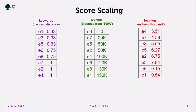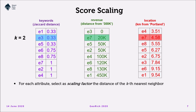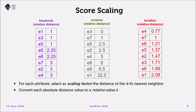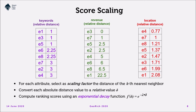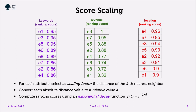Let's take a closer look at how we do the scaling of scores. These are the contents of the ranked lists for our query example regarding companies in Portland. As you can see, distances per attribute are expressed in different units: Jaccard distance for keywords, currency for revenue, and kilometers for distance from the query location. To make them comparable, we select a scaling factor based on the distance of the K-th value in each ranked list, and convert each absolute distance into a relative one separately for each list. We then use those relative values in an exponential decay function with a suitable parameter lambda as a decay factor, to provide final ranking scores in the range between 0 and 1.